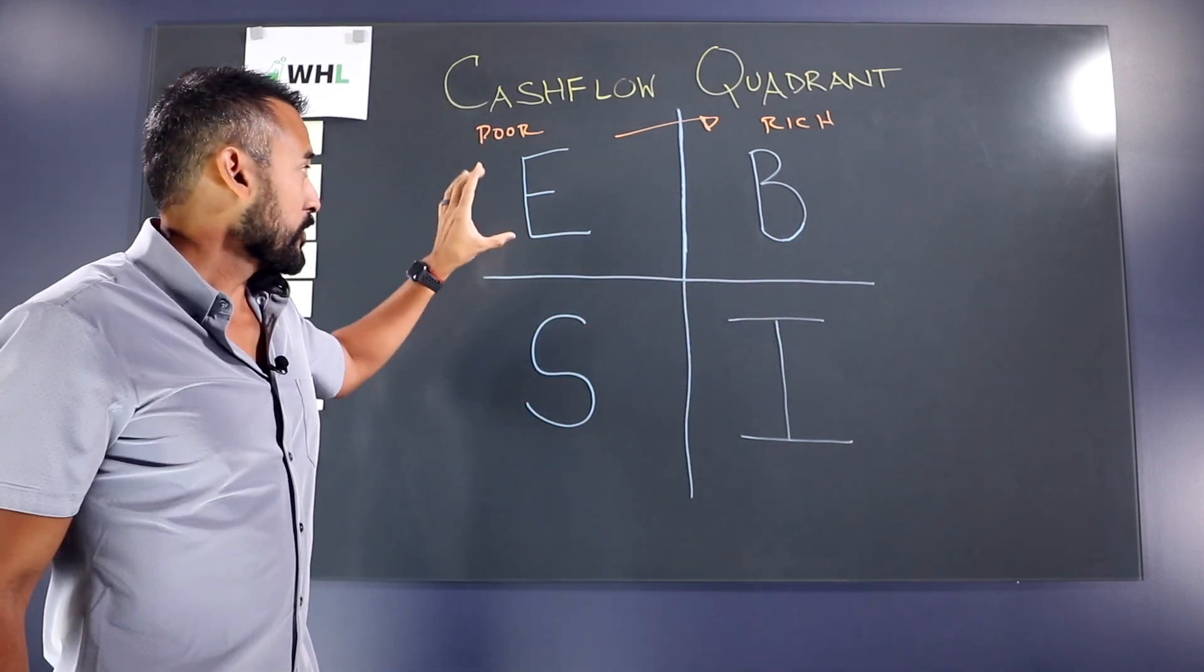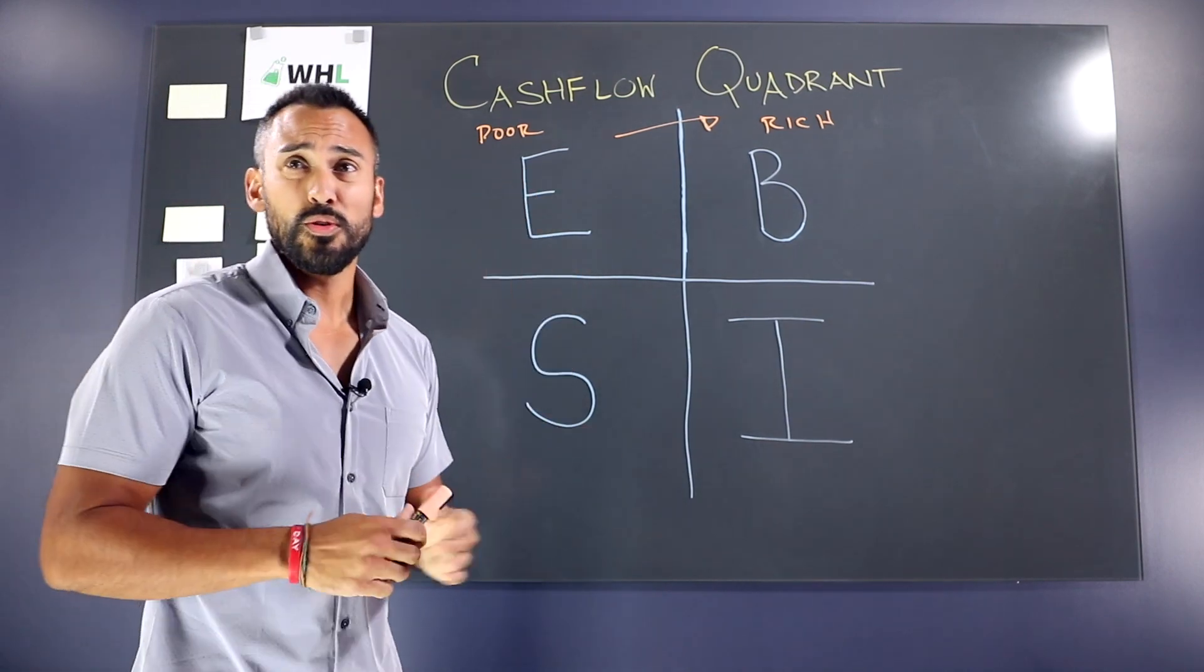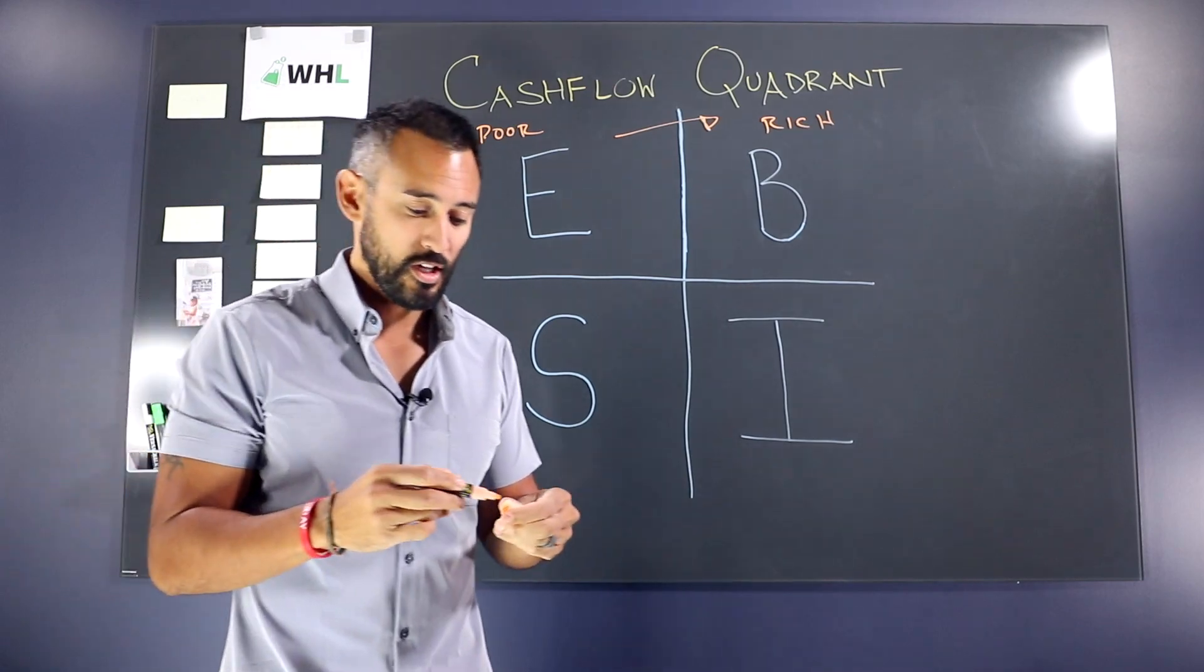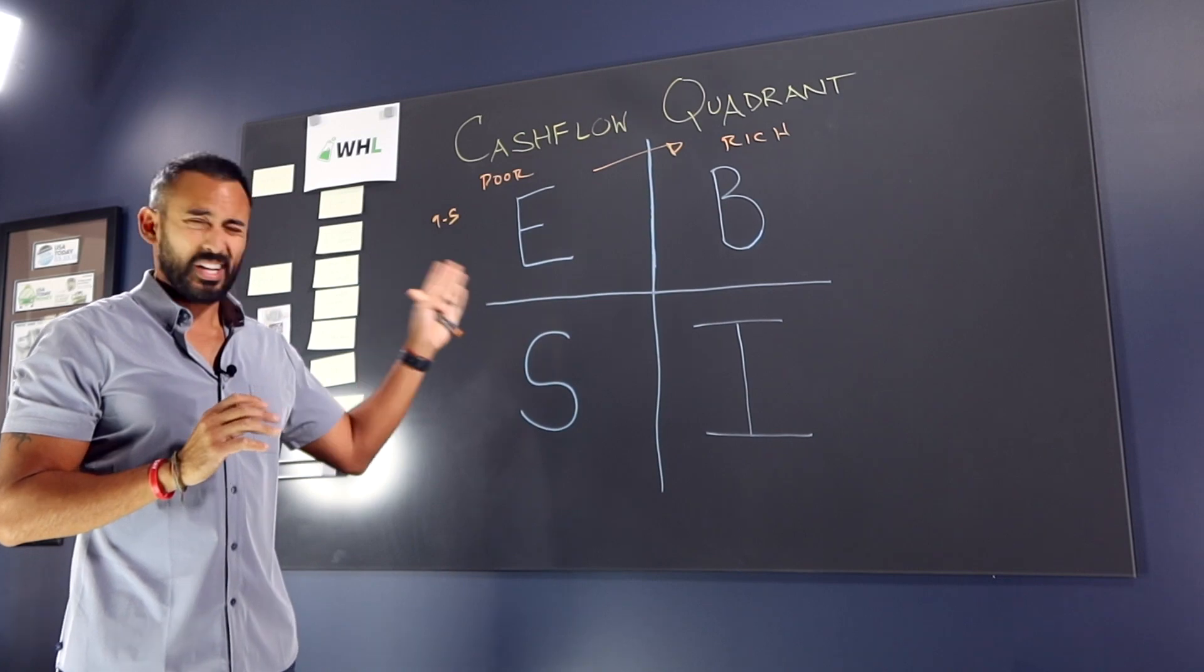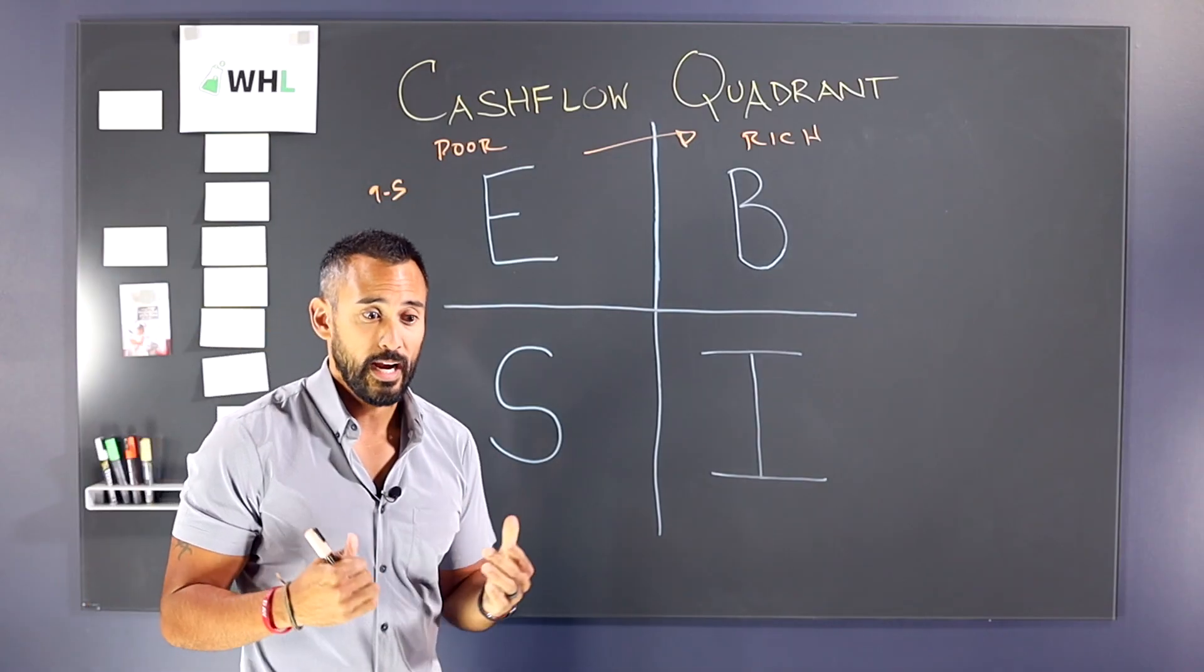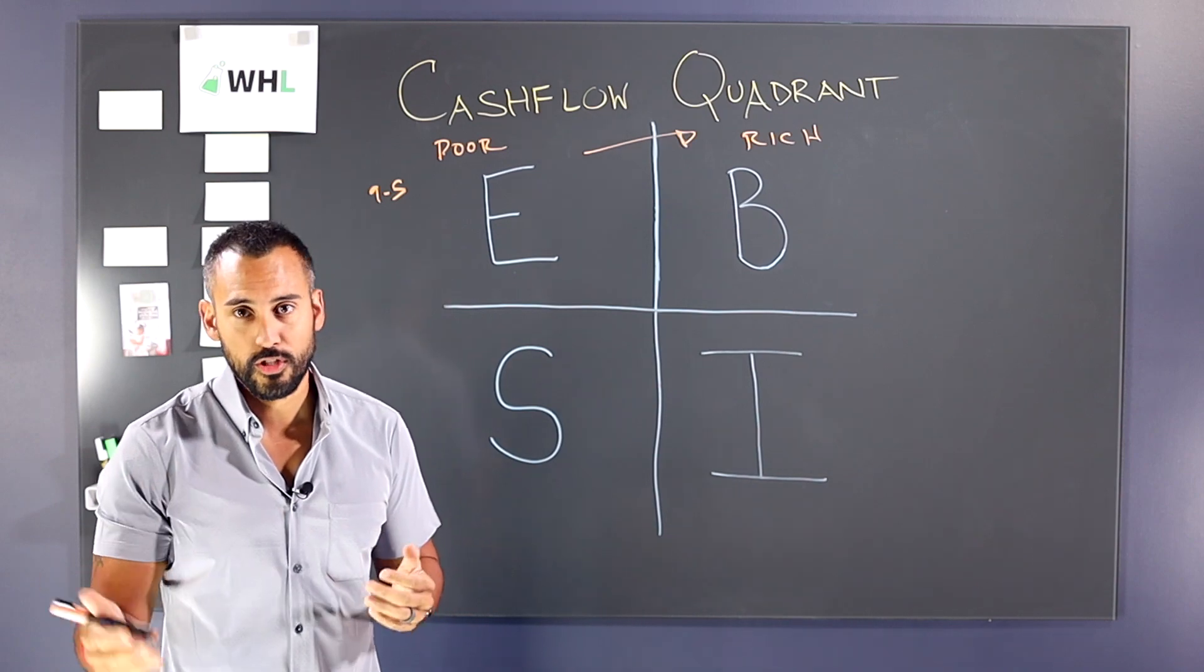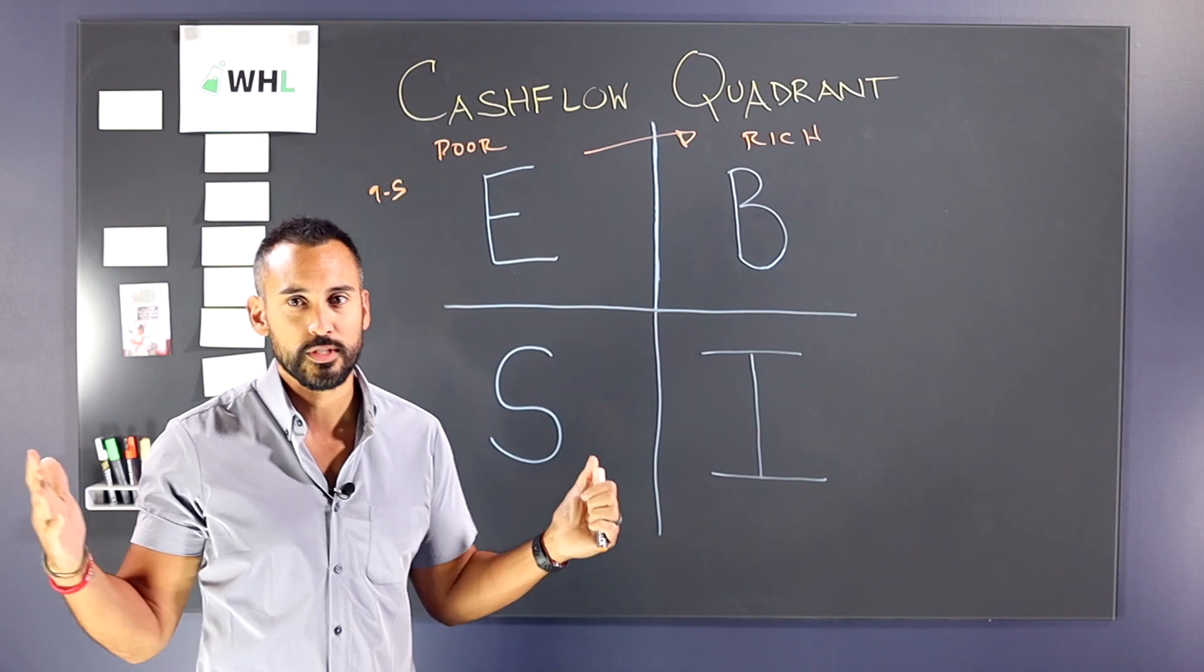So starting off, E stands for employee. So this is your typical nine to five. Those are, you probably experienced this, you've got your nine to five job, you're clocking in, you're clocking out. This is what most people are accustomed to. And what Kiyosaki really talked about in Rich Dad Poor Dad was how most of us are taught. Most of us are trained to go to school, get a degree, get a good job, work till you're 70, put in your 401k and then you retire.